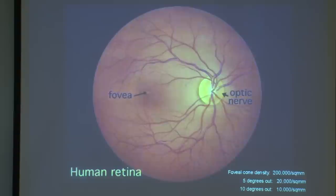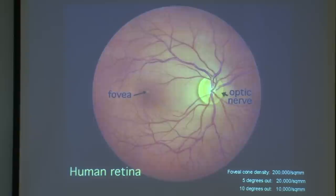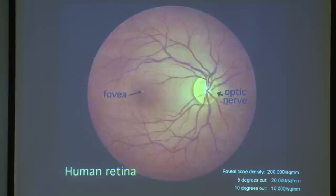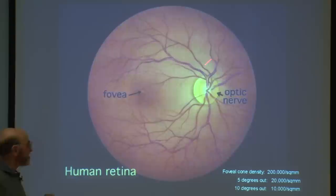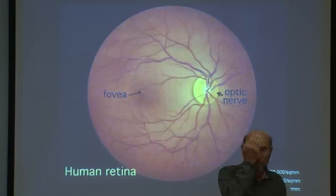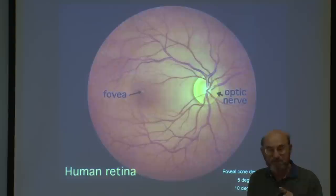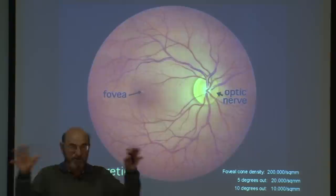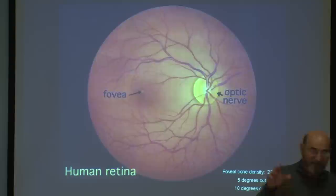All the fibers from the retinal ganglion cells course across the inner surface of the retina and go to the optic nerve, through which over a million fibers from the retina project into the nervous system. There is also an area often called the blind spot — if you do a careful experiment you can map out this little region where you don't see anything. The blind spots are in different locations in the two eyes, so they do not overlap, and when you look with both eyes you don't have a blind spot.